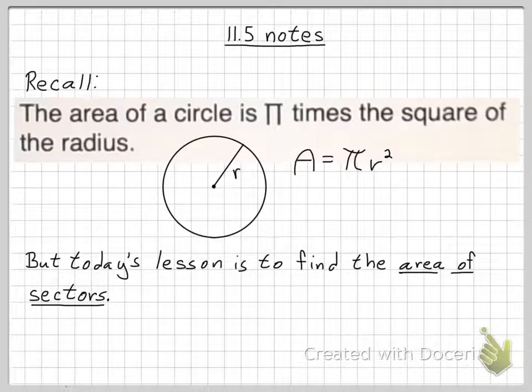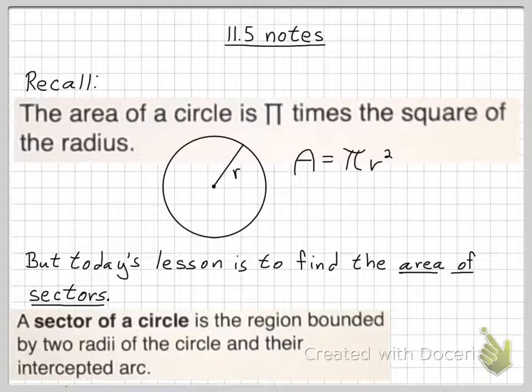And what is a sector of a circle? A sector of a circle is the region bounded by two radii of the circle and their intercepted arc. Please write all this down and get caught up. Remember, you're in total control of this presentation — if you'd like to fast forward, rewind, or pause it, you're in total control.